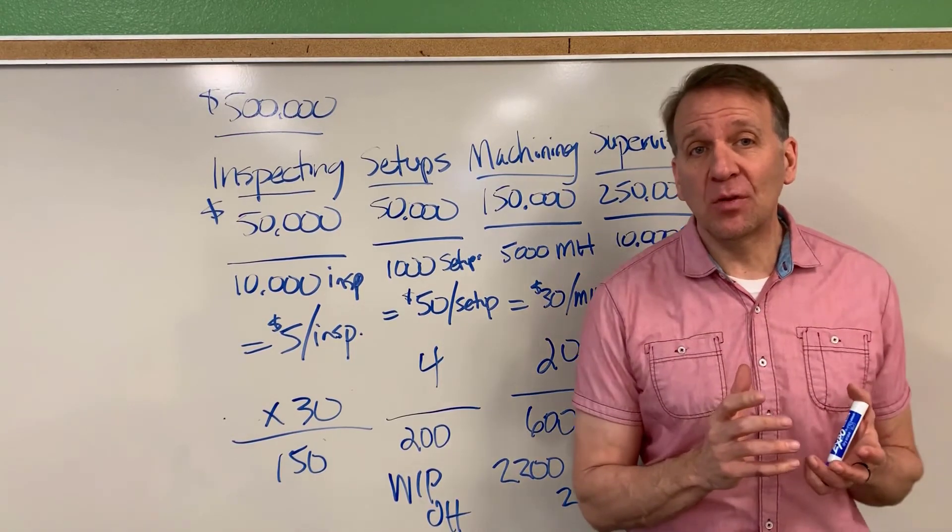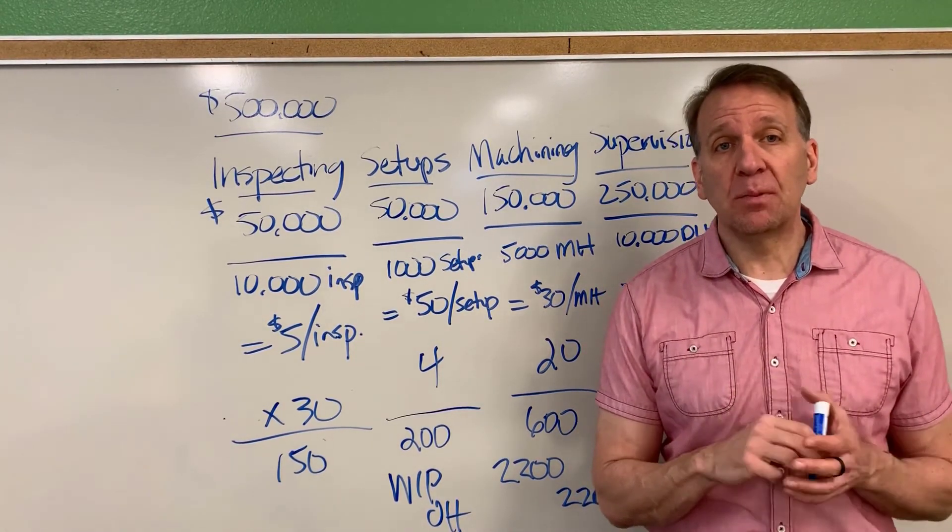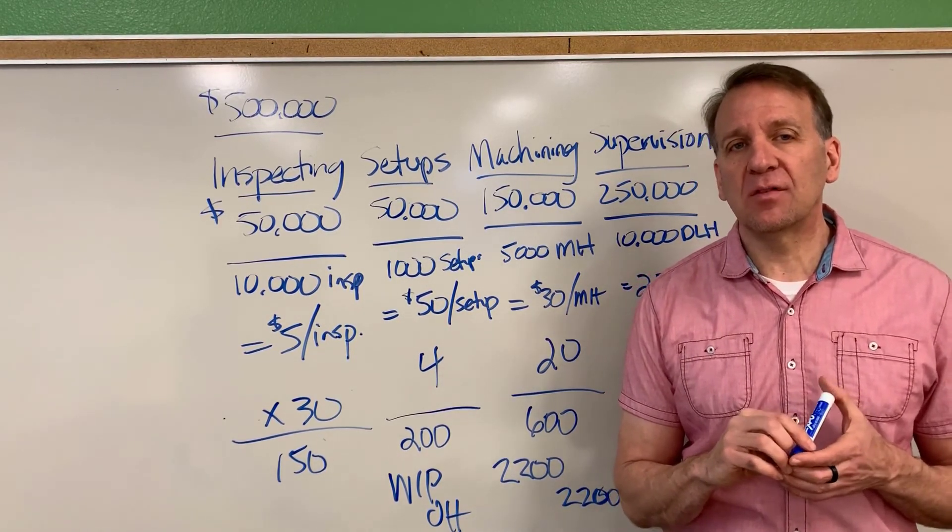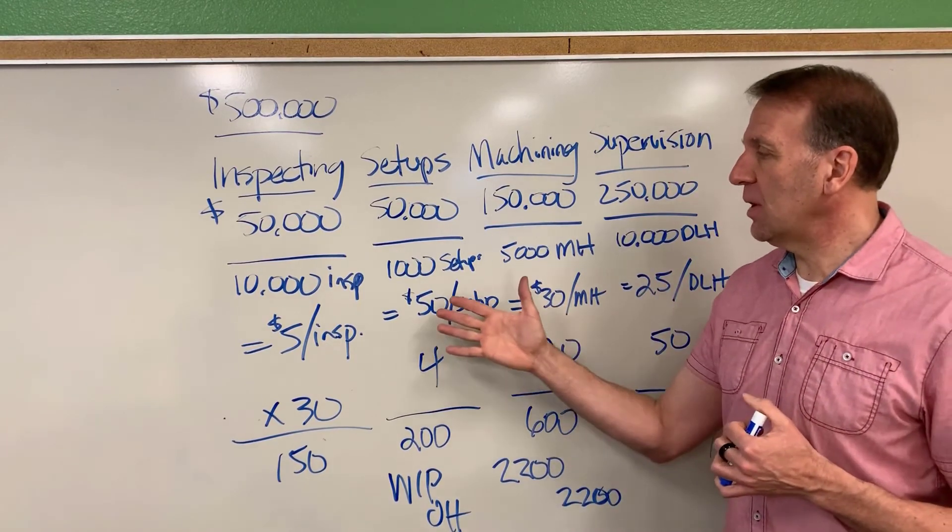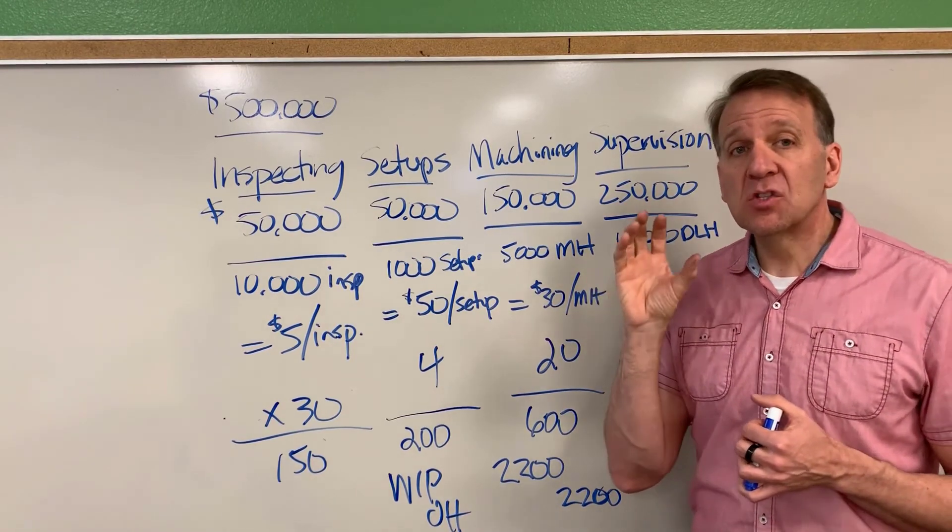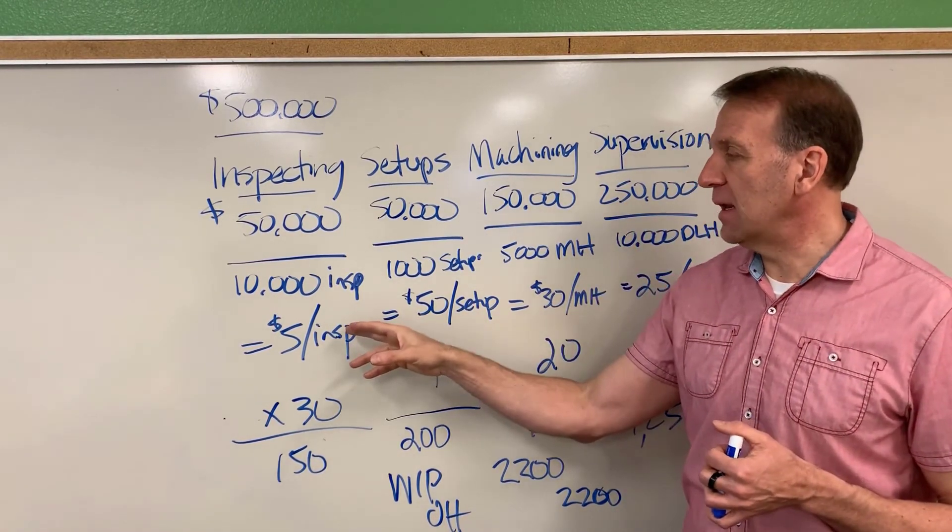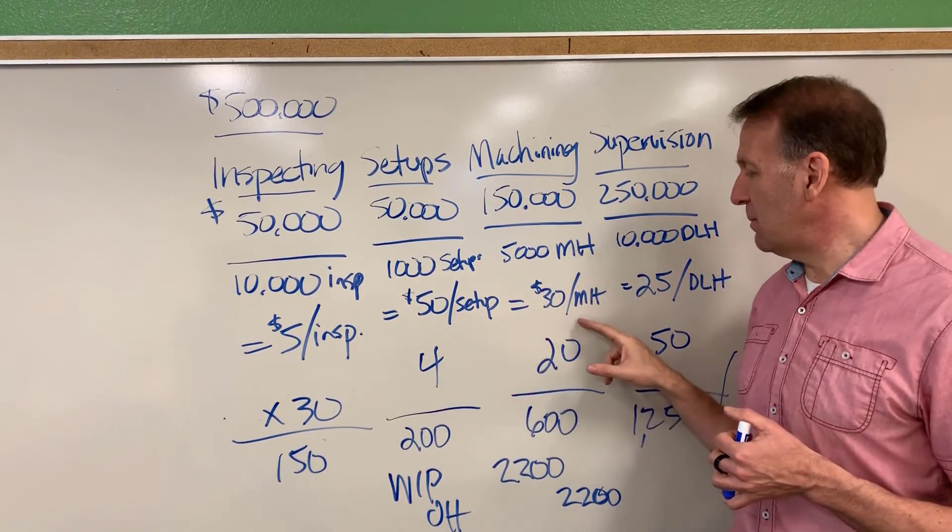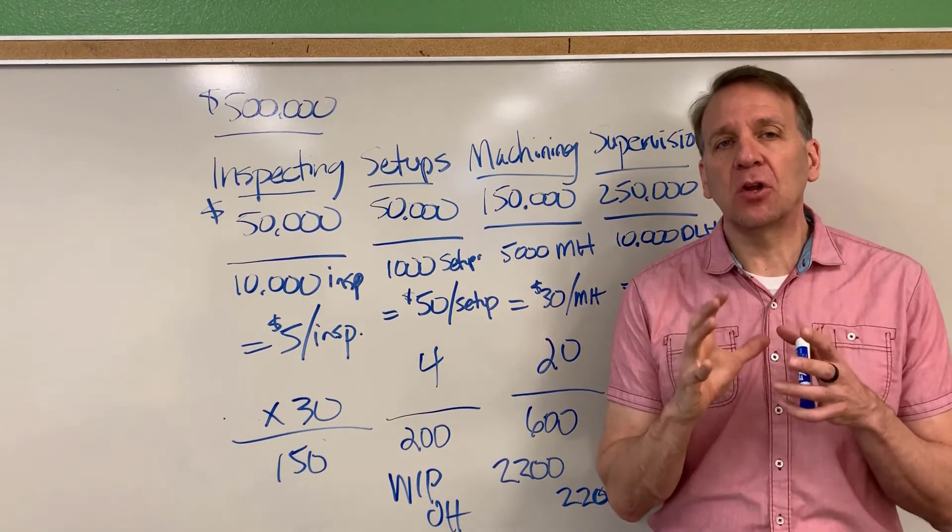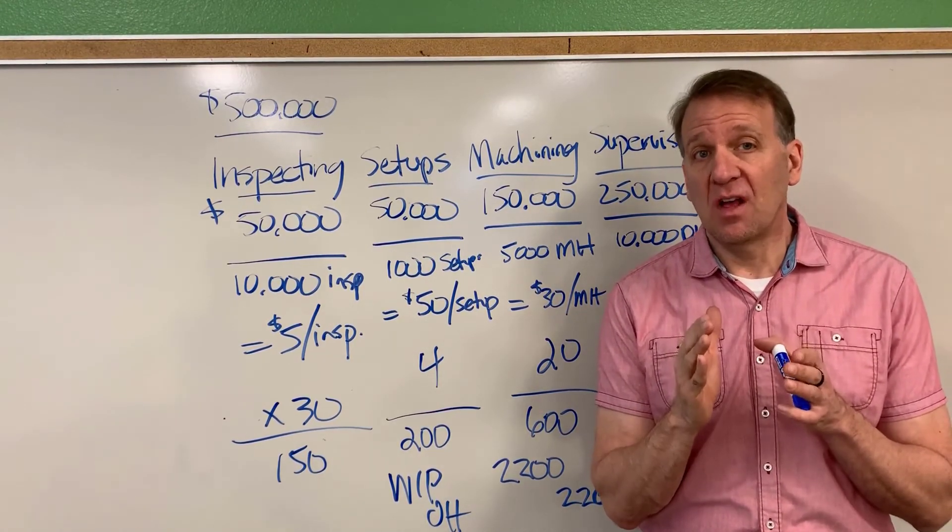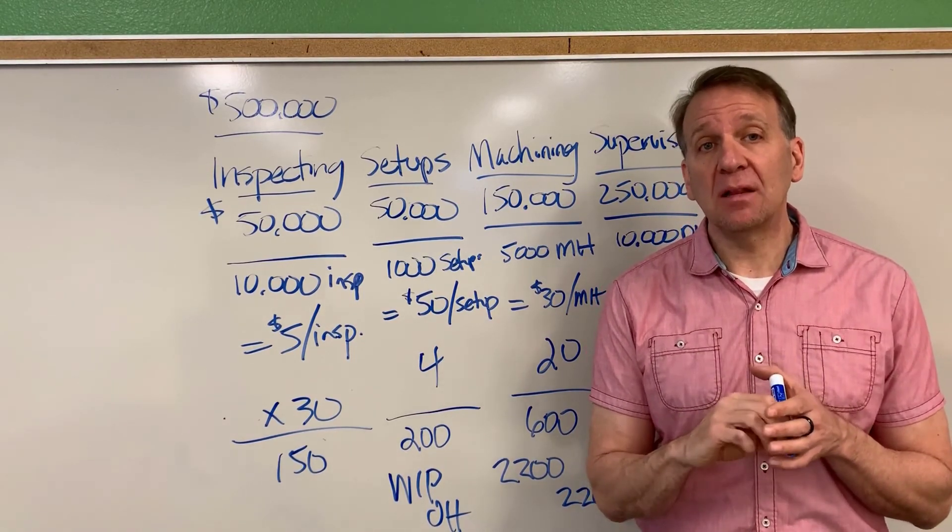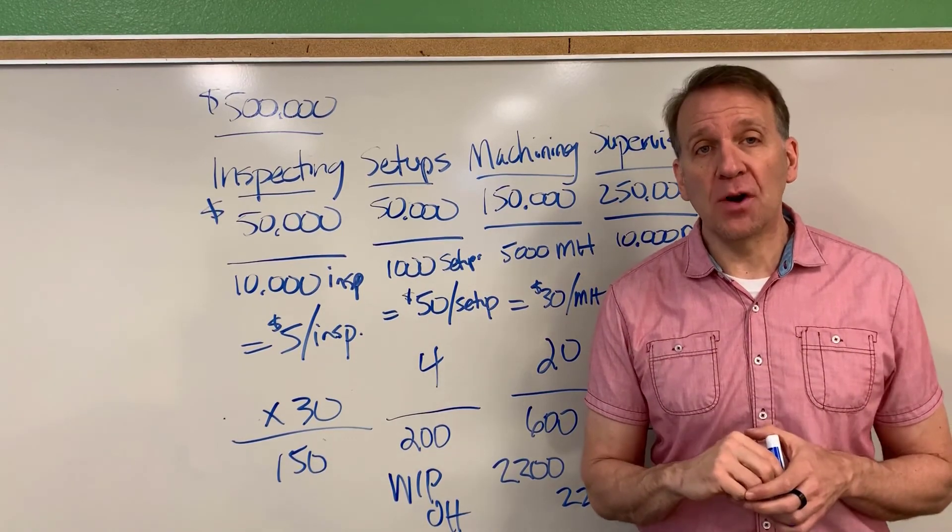Well, class, I hope this has helped. You may need to go back to a previous predetermined overhead rate video, just to get refreshed and make sure you understand why we're calculating these overhead rates. But in this example here, you can see that we're doing this because we're being more specific. We're saying certain overhead costs are driven by different things like inspections, setups, machining hours, and direct labor hours. So we're being more careful here and making sure that we're allocating the costs on how they truly are being driven, so that our jobs are getting a more correct amount of overhead in them.